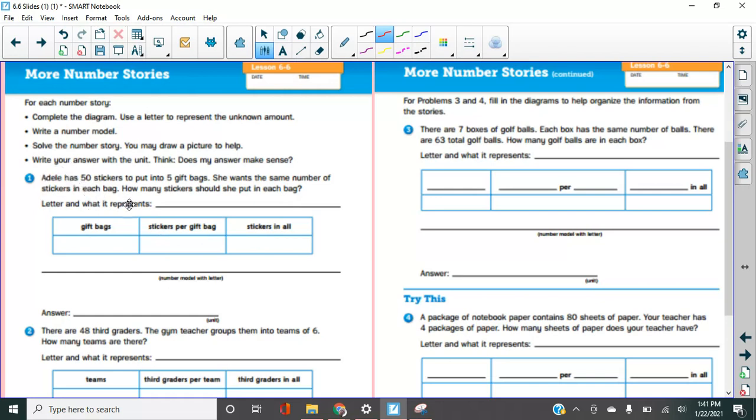Okay. You're going to choose. Oh, it looks like we're going to choose a letter here. So when I was talking about the B for bags, that's what you're going to do here as well. Should have done that on the other one as well. And then you're going to fill in these, how many gift bags? Well, you got to read this, how many stickers per gift bag and how many stickers in all. There will be one of these that you don't know. Okay. And then it is your job to then try to write the number model and find the answer.